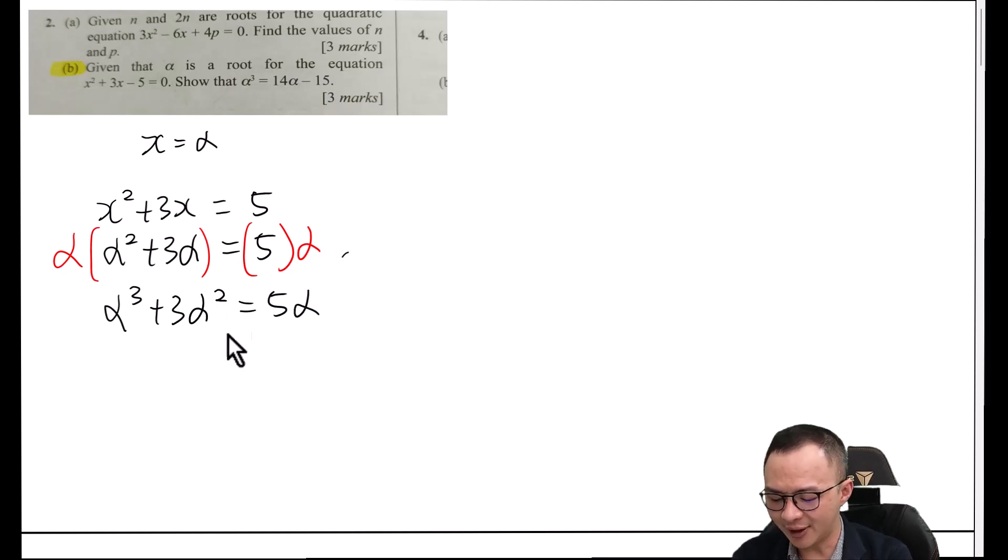This one is actually quite close, but at least I have some alpha power of 3, but I don't have something like 14 alpha and minus 15. So from this one, if I substitute alpha into it, we got alpha squared plus 3 alpha equals 5.